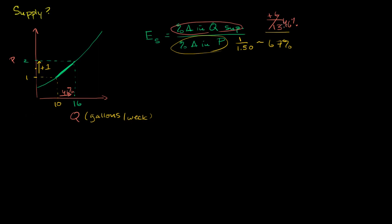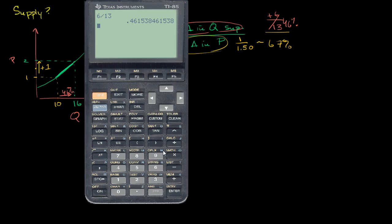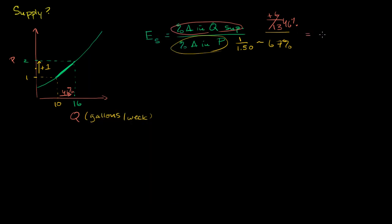And so we can see our elasticity of supply is going to be 46% over 67%. So it's going to be something less than 1. We can get, so that's going to be that, divided by 0.6666, it keeps going on forever, gives us 0.69. So this gives us an elasticity of supply of 0.69.